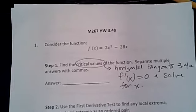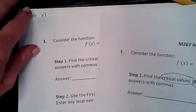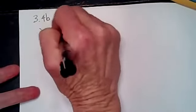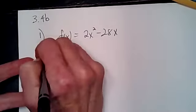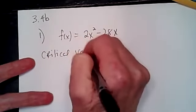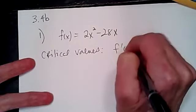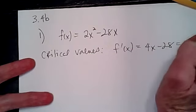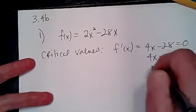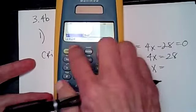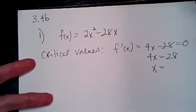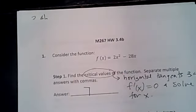So if my function is f(x) = 2x² - 28x, to find the critical values I set the derivative equal to zero and solve for x. The derivative gives us 4x - 28 = 0, and solving: 28 ÷ 4 = 7. So x = 7 is my critical value.